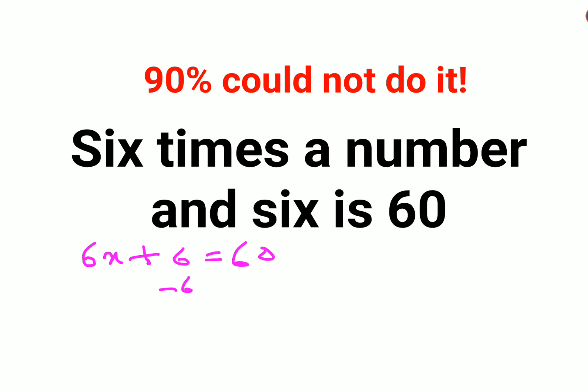In order to find the value of x, you will subtract 6 from both sides. So this will cancel, and I am left with 6x = 54.